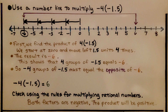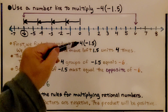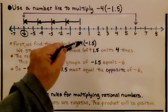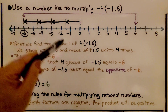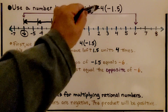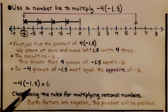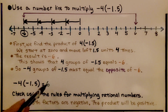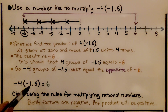We started by multiplying with the opposite as a positive, and that gave us negative 6. So when we go back to negative 4, it should be the opposite of negative 6 — it should be positive 6. We can check using the rules for multiplying rational numbers: both factors are negative, so the product will be positive.